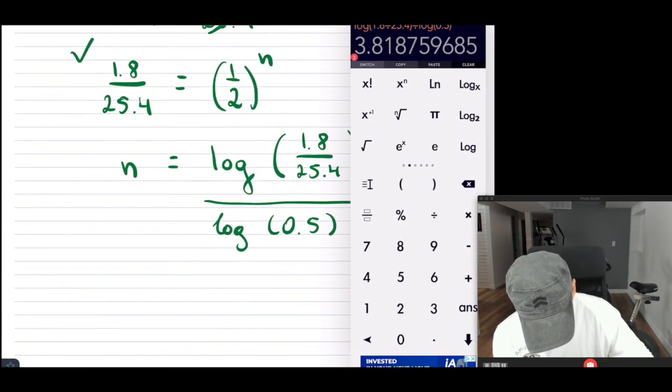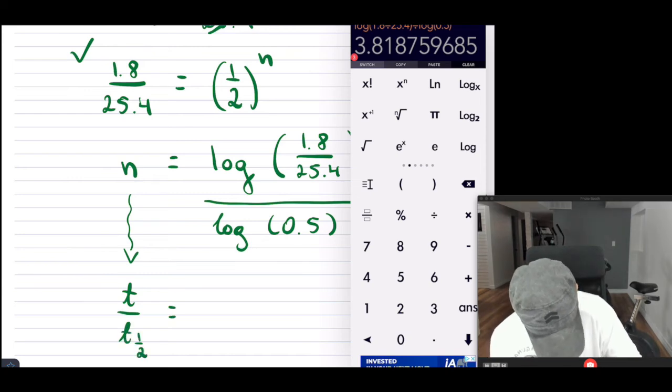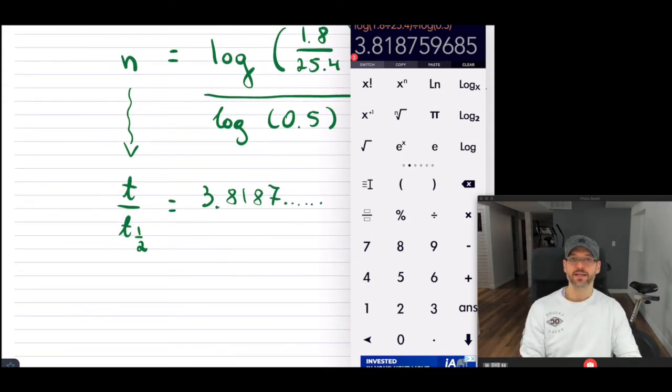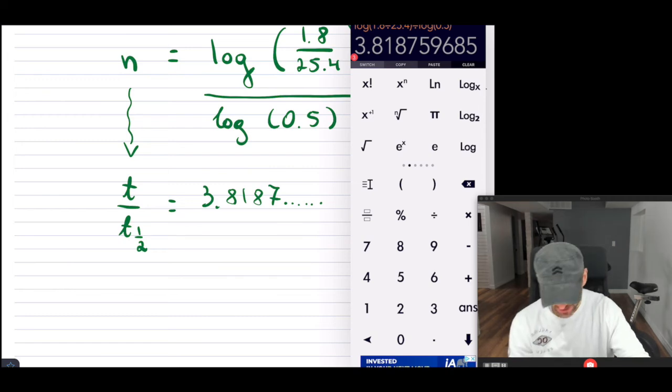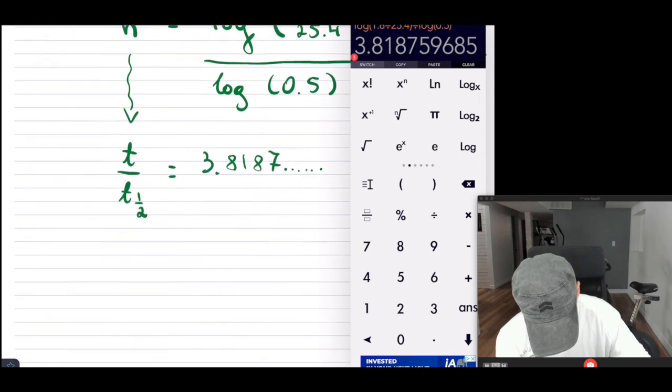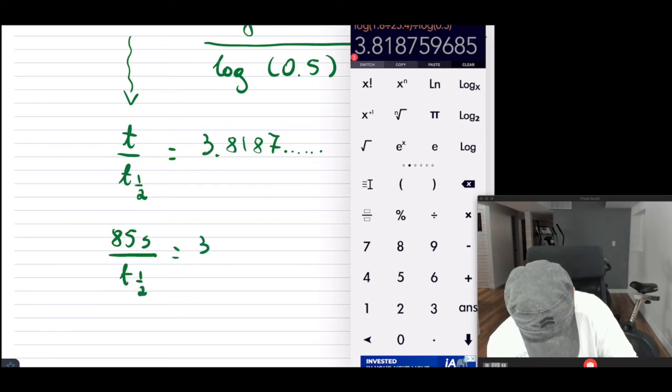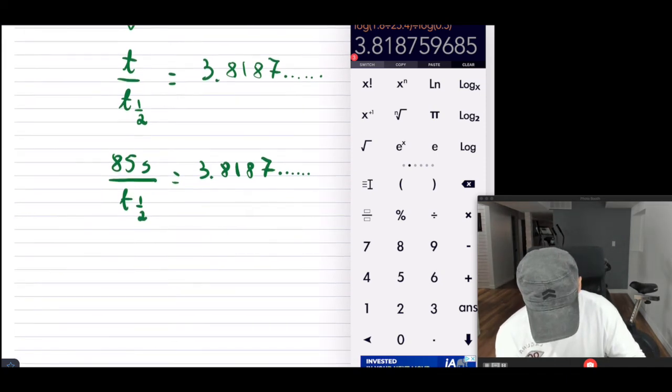So I have to be able to solve this for my half-life time. So N, this is T over a half, is equal to 3.8187, and so on. Now, I know T, so T was given to me, so this was 85 seconds. So I have 85 seconds over T one-half equals to 3.8187. So now rearranging this, I have T a half, so I'm going to multiply both sides. So this is going to come up on the other side. And I'm going to get 85 divided by 3.8187, and so on.